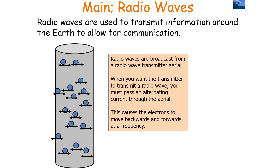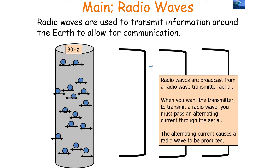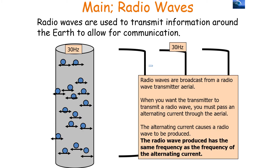The alternating current causes the electrons in the aerial to move backwards and forwards at a frequency. For example, if this frequency was 30 Hz, the electrons would oscillate backwards and forwards 30 times every second, producing the radio wave. The key idea is that the radio wave produced has the same frequency as the frequency of the alternating current — so a 30 Hz alternating current produces a 30 Hz radio wave.